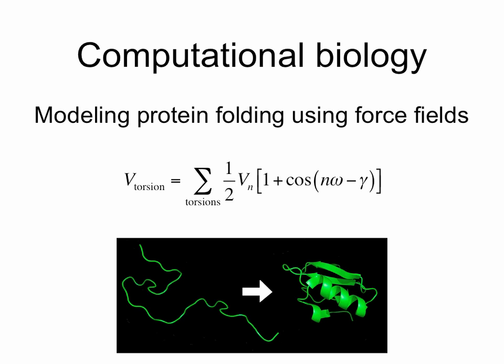Trigonometry also has its uses in biology. For example, if you're modeling protein folding using force fields, you'll want to calculate the torsional energy in bonds trigonometrically.